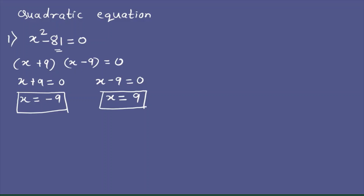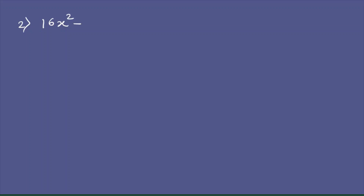Let's take the second example: 16x² - 64 = 0. The leading coefficient is 16, which is the perfect square of 4, and 64 is the perfect square of 8. So we write 4x as the square root of 16x², and 8 as the square root of 64.